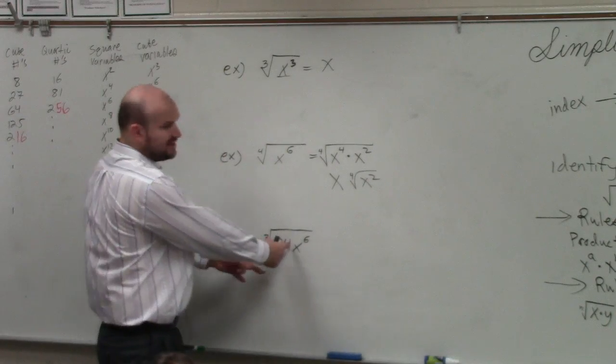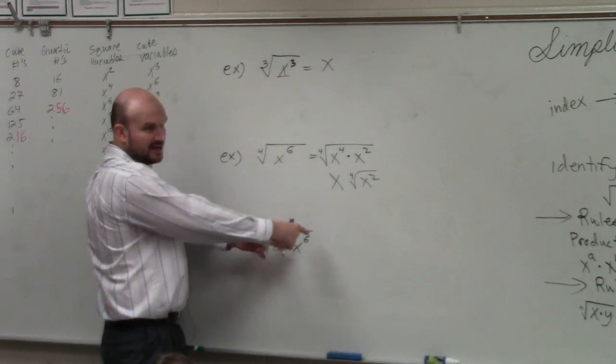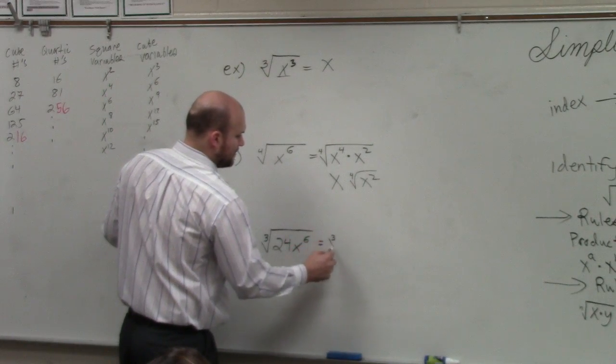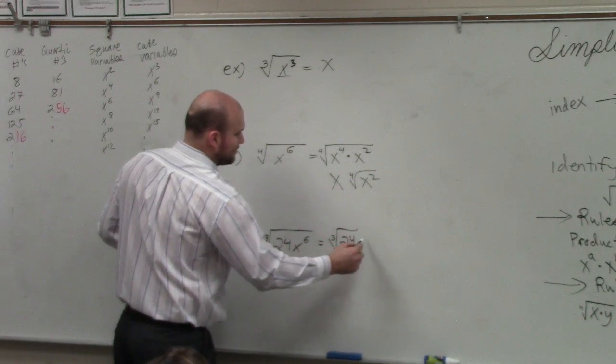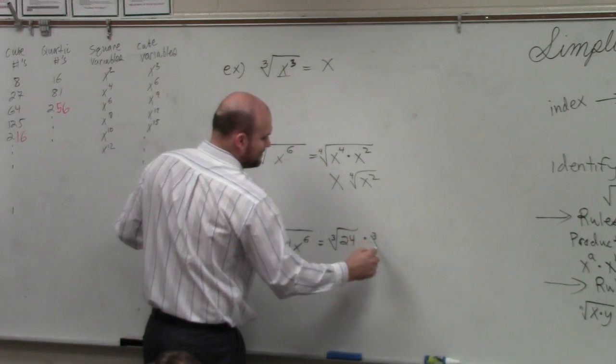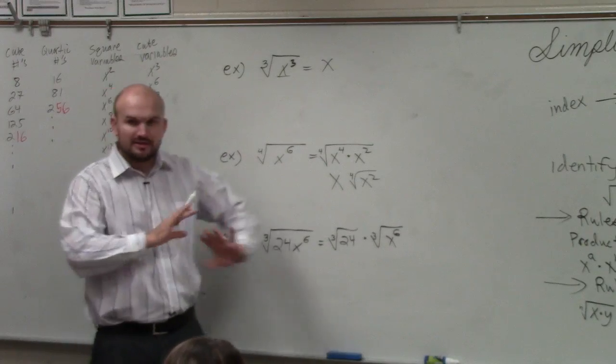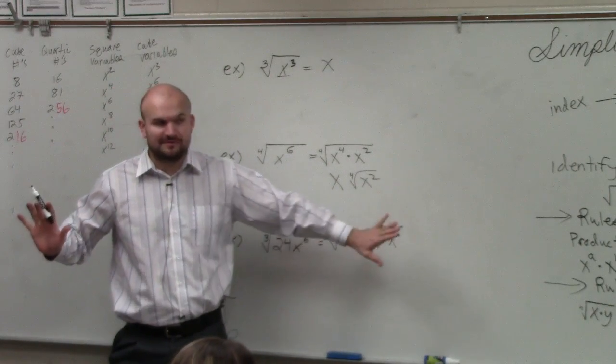So I can just separate this as the cube root of 24 and the cube root of x to the 6. Sometimes that just makes it easier to have your numbers and your variables separated. You don't have to do it this way, but I think when you're first learning, sometimes it's just better to separate your numbers and your variables.